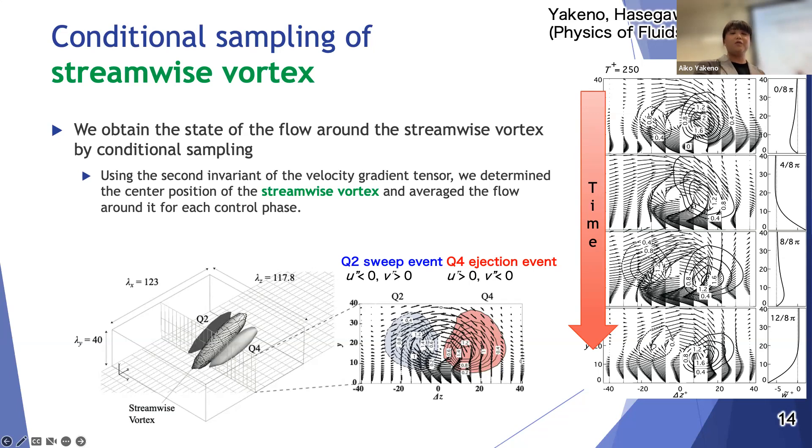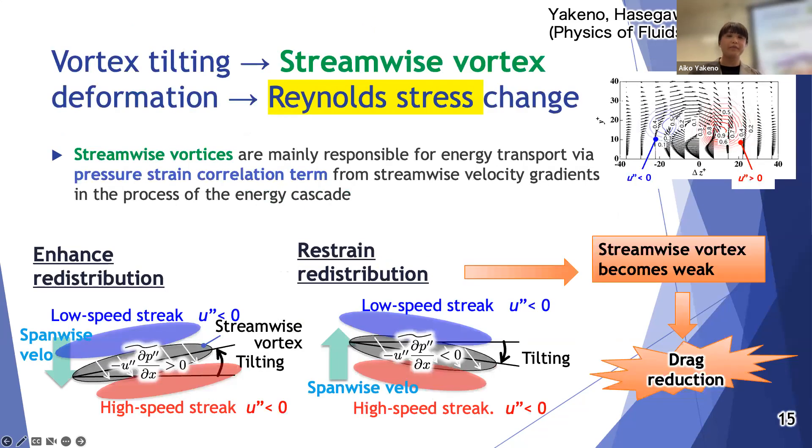Because the vortex and Q2 event weakened when the direction of shear in the Stokes layer and the direction of the rotation of the vortex were the same, and strengthened when the direction of shear and direction of rotation were different. After much thought, I came up with the following possible explanation in the next slides.